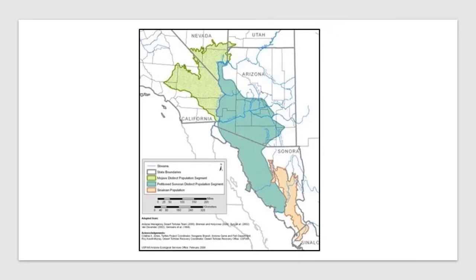A lot of people don't realize there are actually three different species of desert tortoises. We only split them into three species in the last couple of years, so it's kind of a new thing. This is a map of the home ranges for each of the three species. That light green blob up north covers the Mojave Desert in California and up into Nevada — that is the Agassiz's Desert Tortoise, or the Mojave Desert Tortoise. The green-blue blob south of there in Arizona and down into Mexico is the Sonoran Desert Tortoise. And that orange blob to the south in Mexico is the Sinaloan Thorn Scrub Tortoise, a newly named species in the last couple of years.